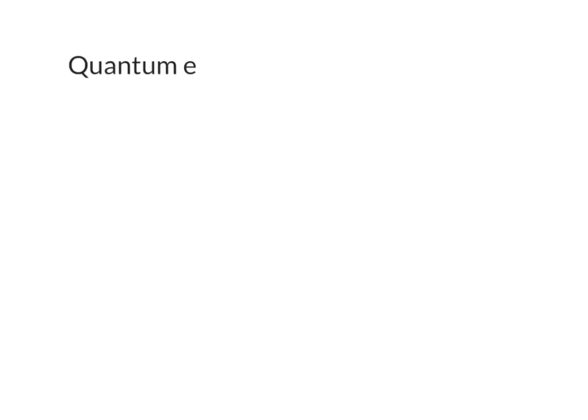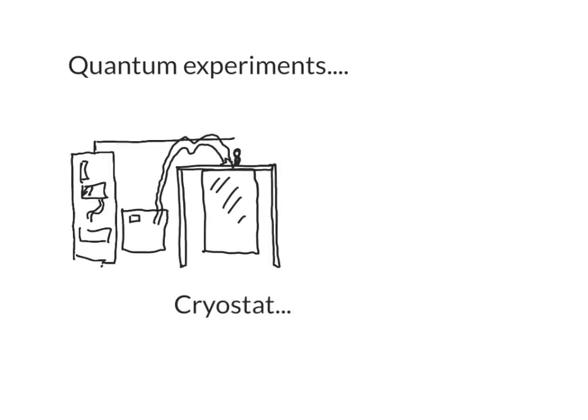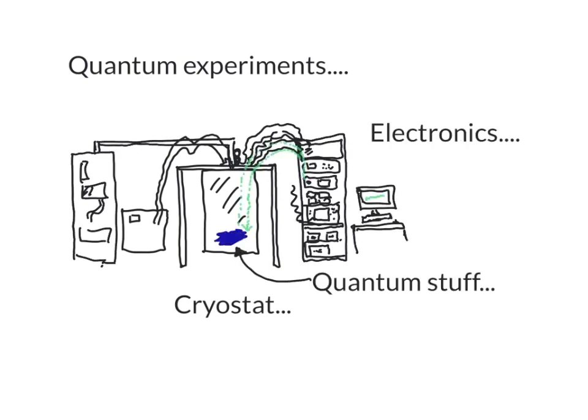To answer this question we went into the lab to do some quantum experiments. These take place in something called a cryostat which uses a bunch of pumps and hard work to get things really cold. We've got a bunch of electronics and the quantum stuff is down in the cryostat at the coldest temperatures.